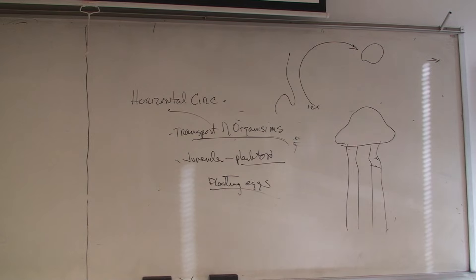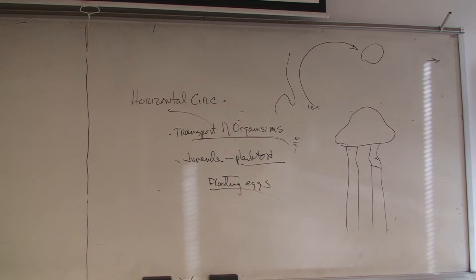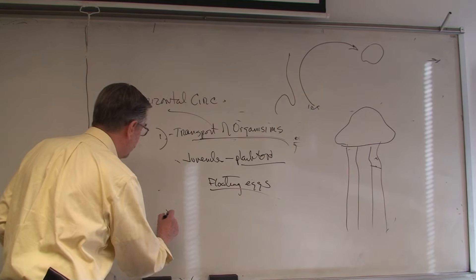Regular plankton like Calanus and phytoplankton also get pushed from one place to another. The Gulf Stream is the current that moves up from the Sargasso Sea along our coast. So horizontal circulation is important for the transport of organisms — juvenile fish, some fish eggs, and all these invertebrates that are part of the plankton as juveniles, eels included.